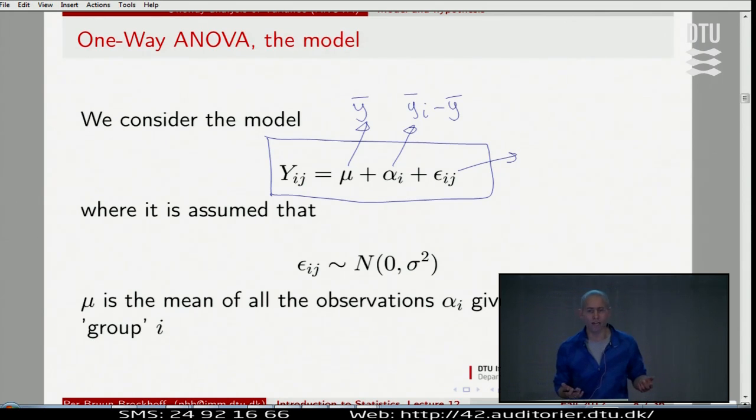So, this corresponds to the individual deviations from the group means within each group. So basically, we have some model terms expressing, corresponding to these numbers that I was playing around with.